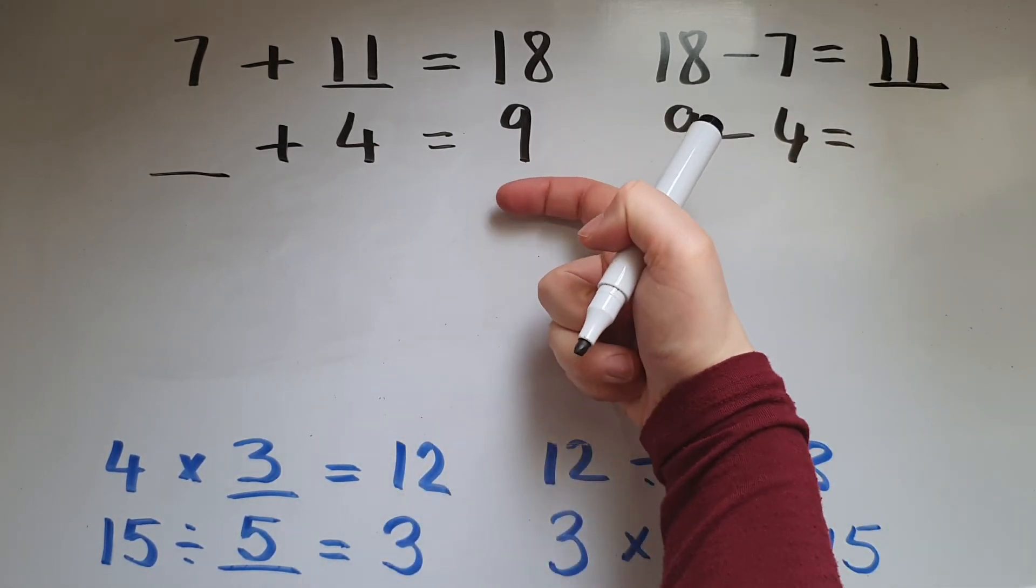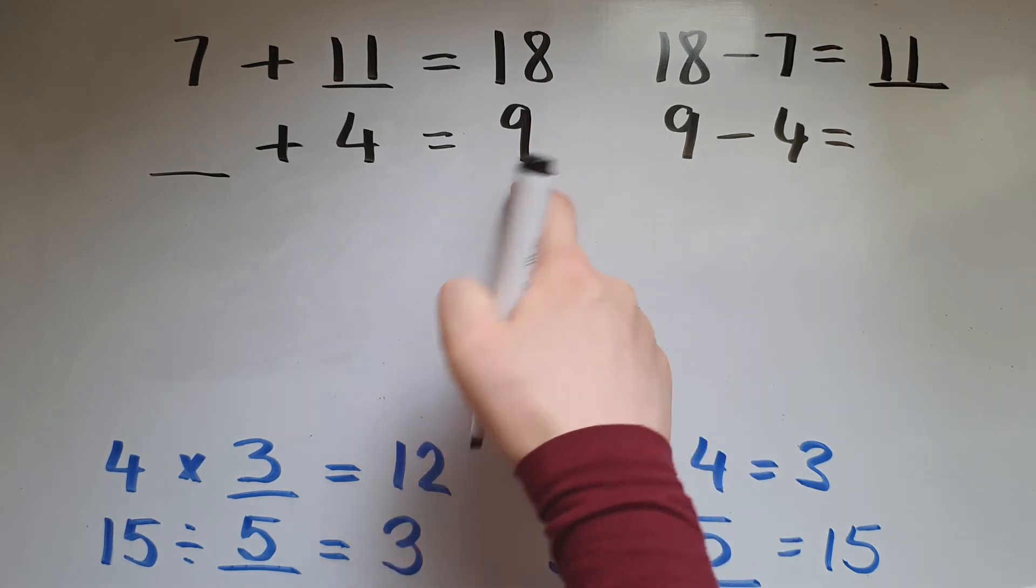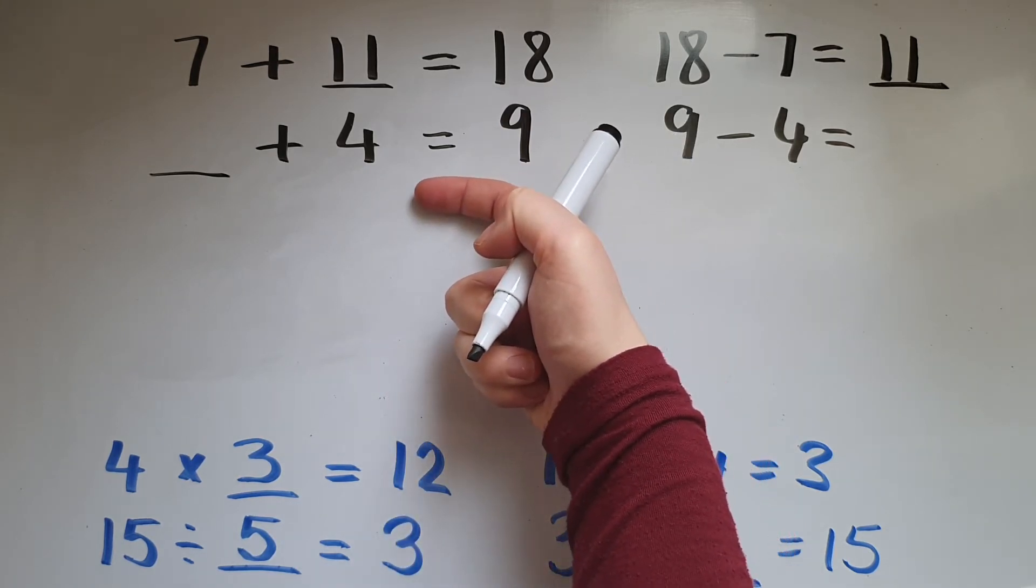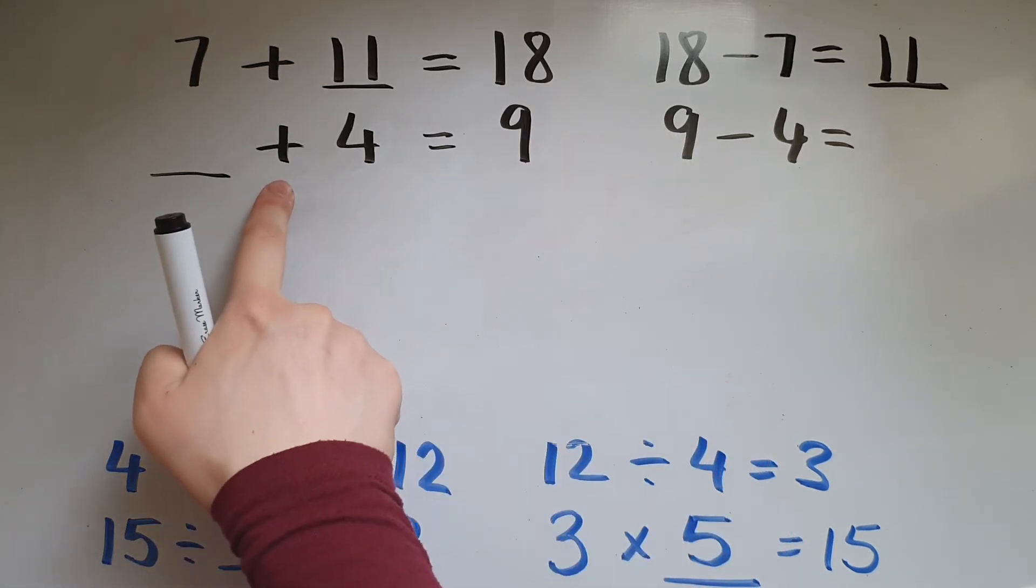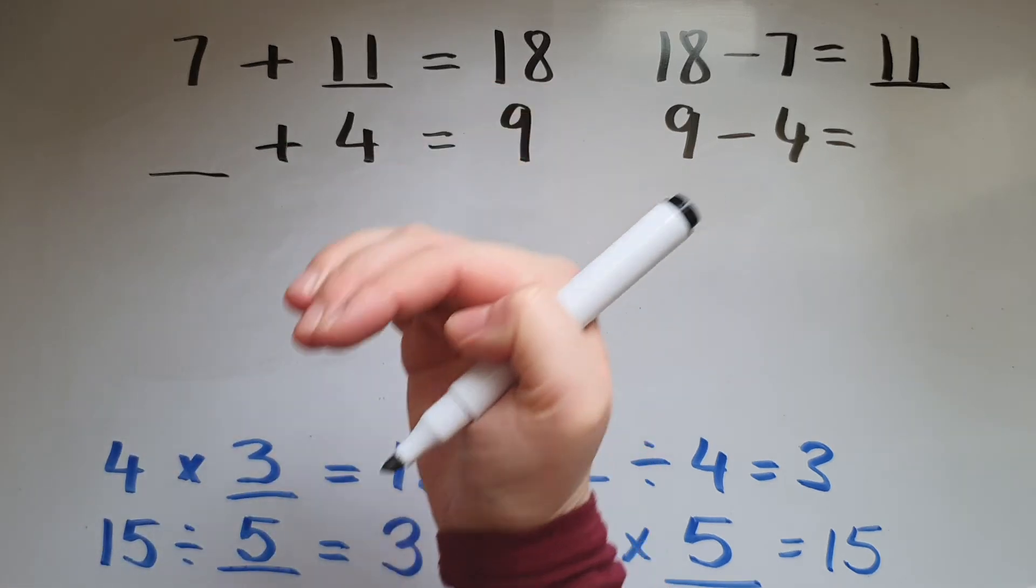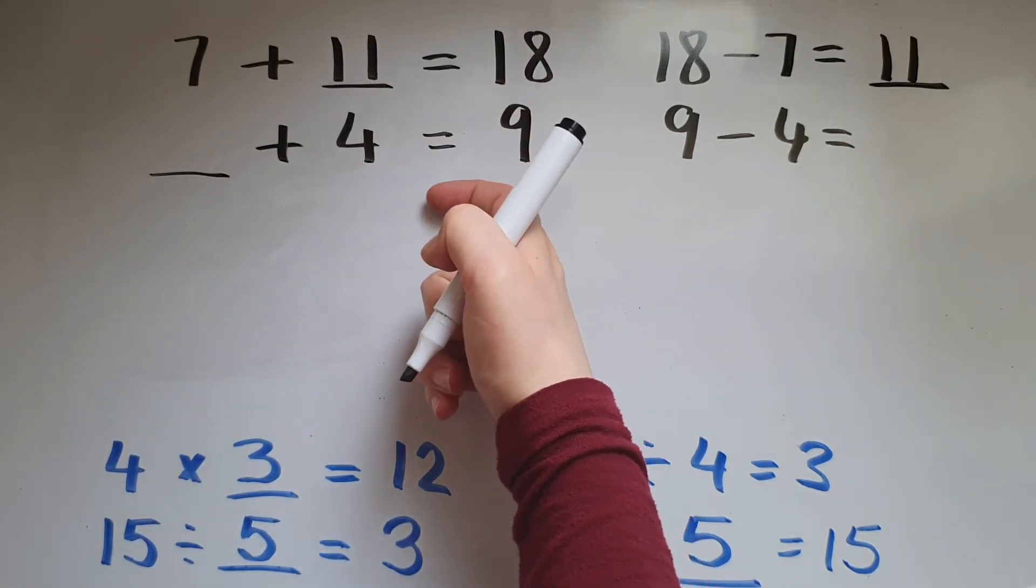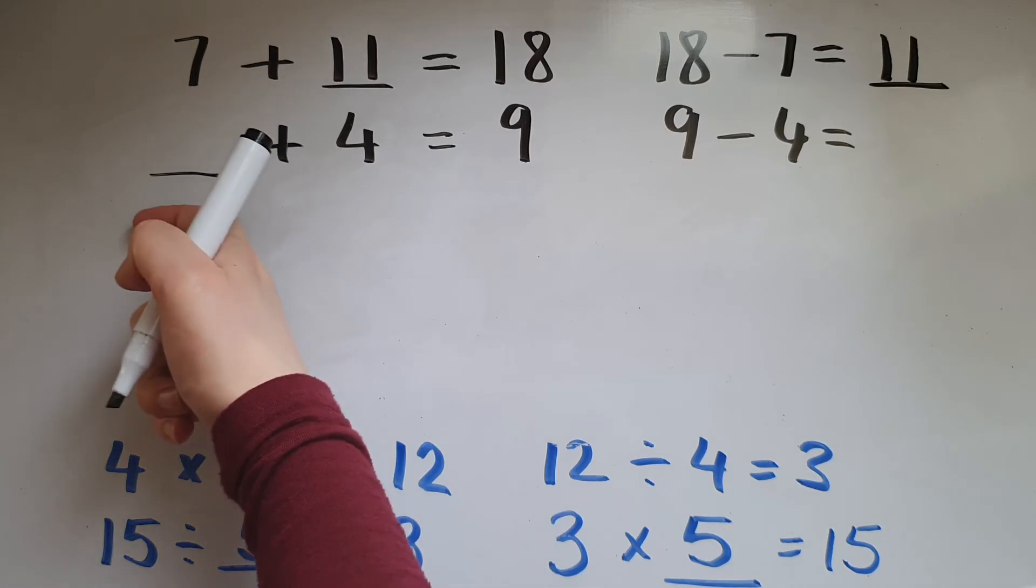So the reverse, starting from the answer, inversing the operation. So that is addition, now we're doing subtraction. So 9 take away 4 gives me 5.